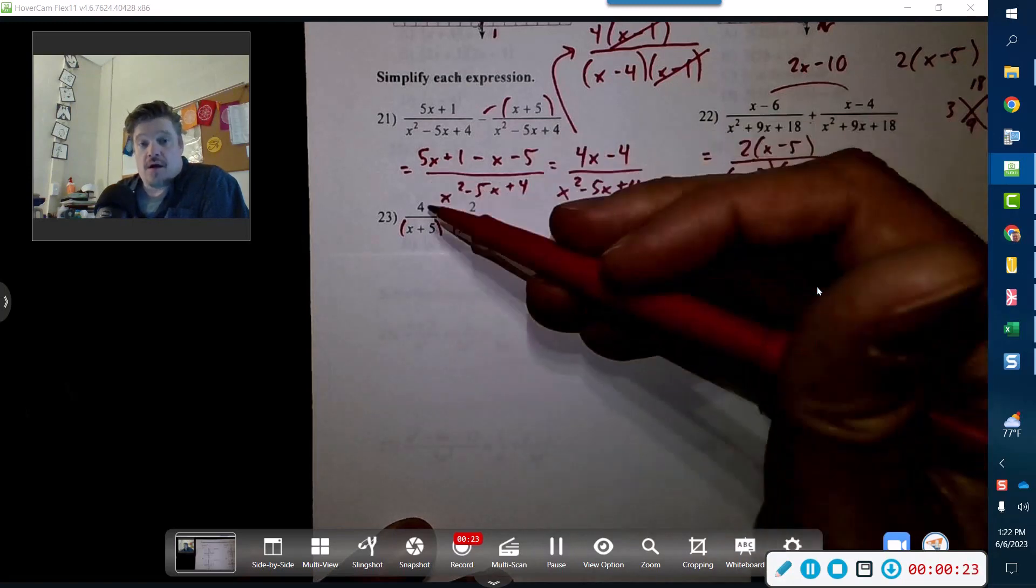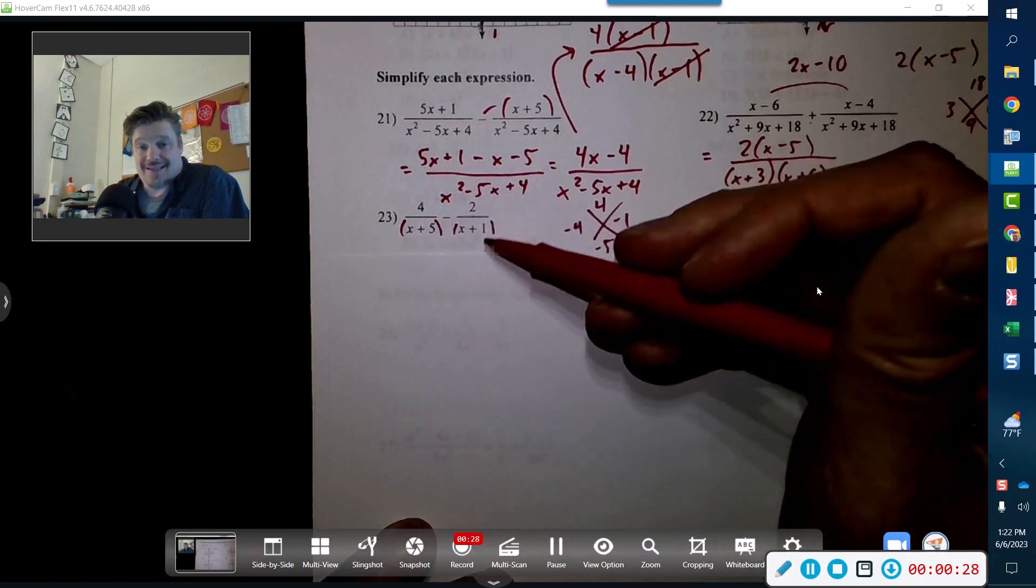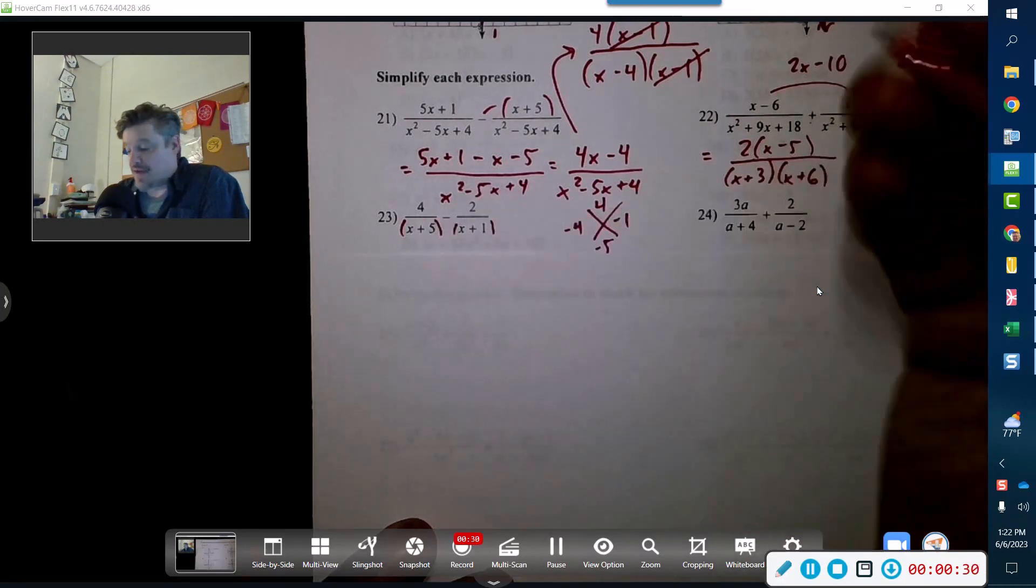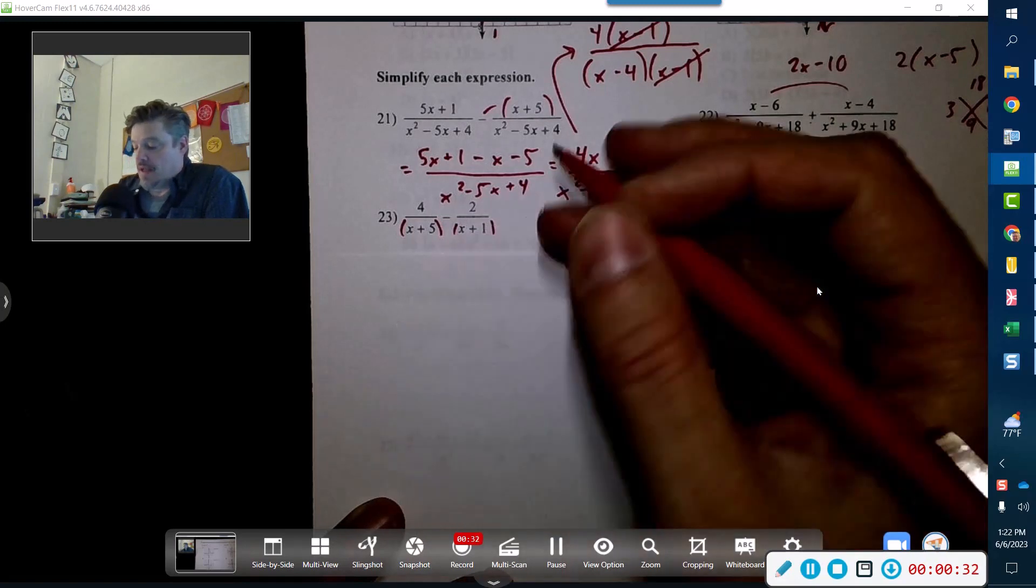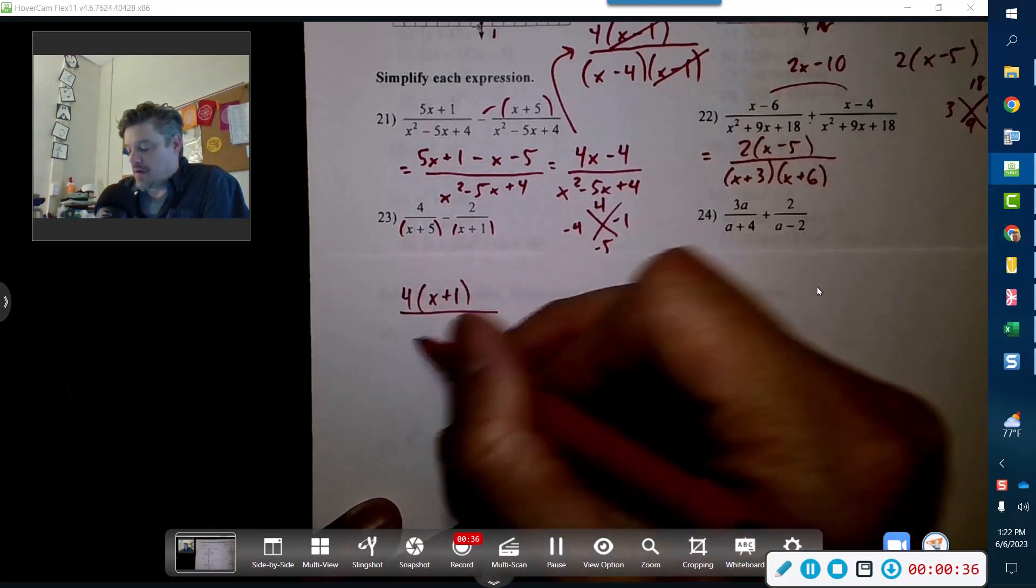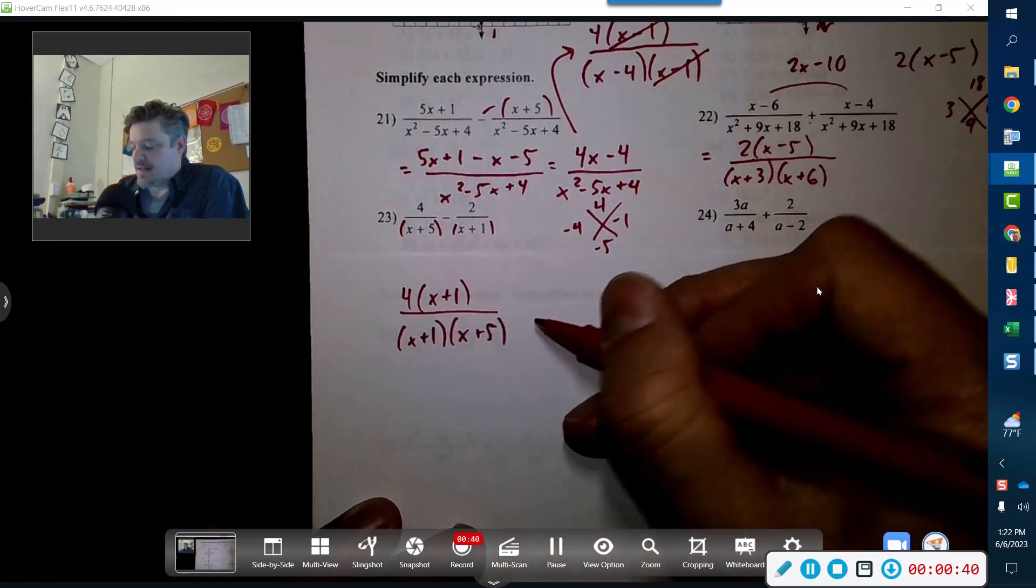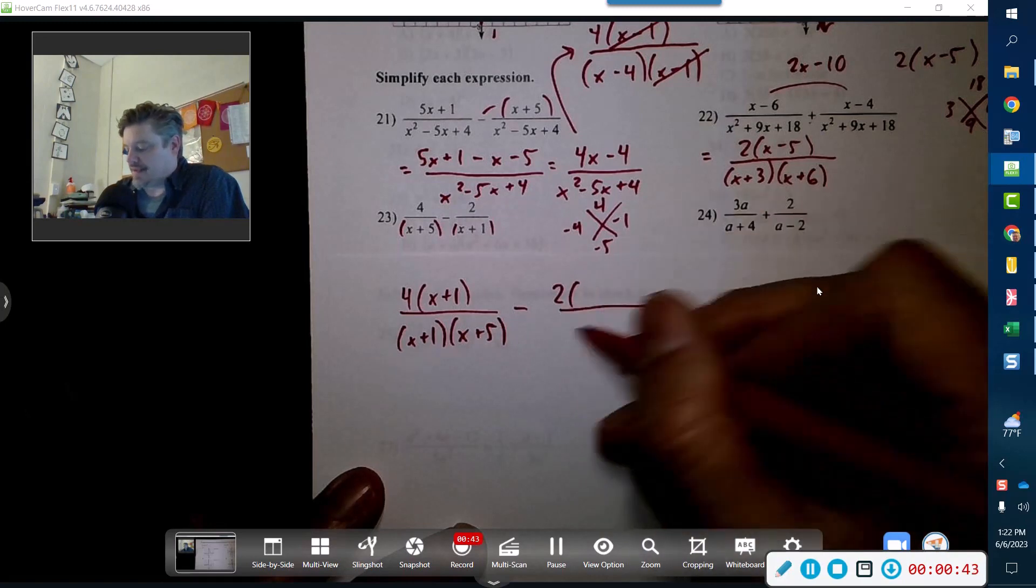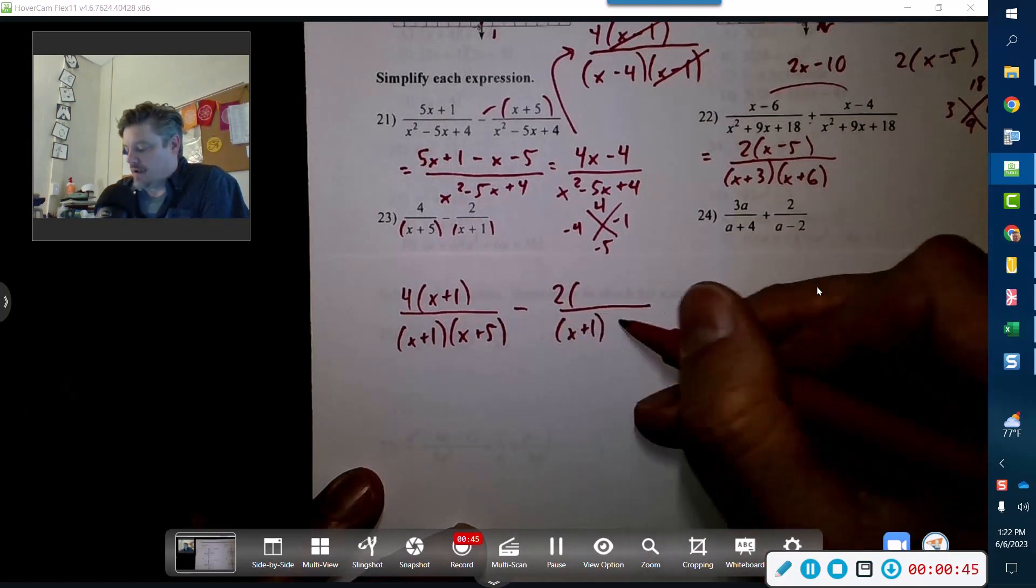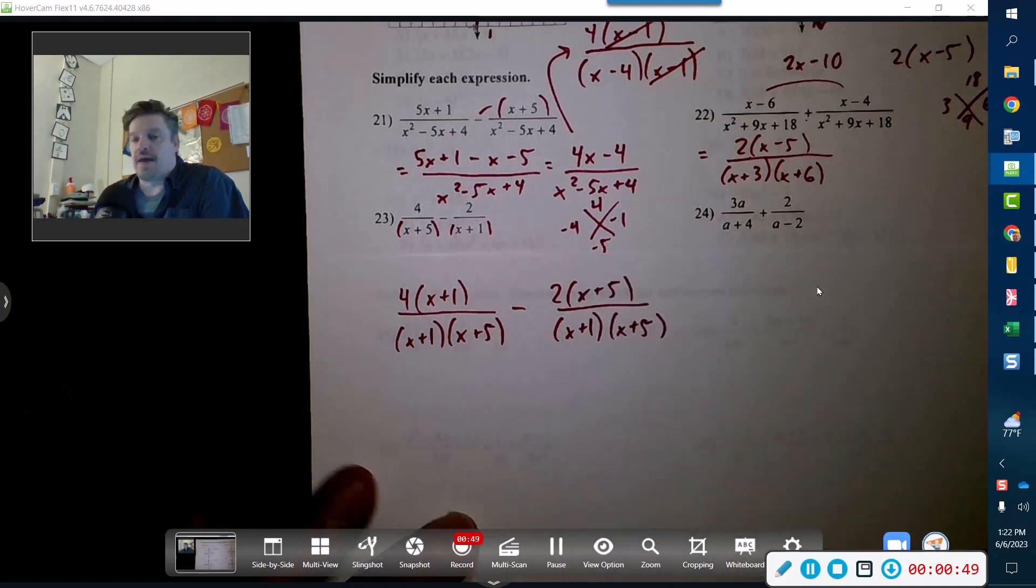So if this guy is an x plus 5, he needs the x plus 1. This guy needs the x plus 5. So what we got to do is you got to give it to them. Now we're gonna give the 4 an x plus 1, and I'm gonna write this out like this this time. And we're gonna give this guy, this x plus 1, also an x plus 5.